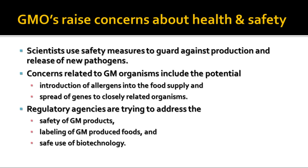Some people are concerned that by genetically modifying organisms you can introduce allergens into the food supply that could cause problems for people with specific allergies, or you could spread genes to closely related organisms. For instance, if Roundup Ready cotton cross-pollinates with a weed outside the field, you could end up with herbicide-resistant weeds. So regulatory agencies are working on the safety of these products, how they need to be labeled, and other safe uses of biotechnology.